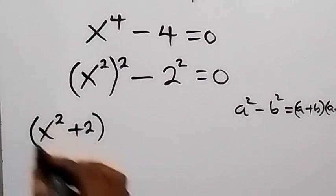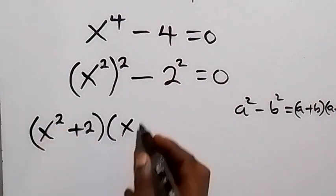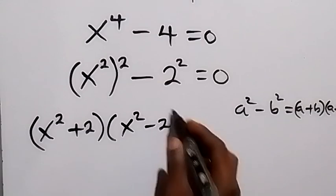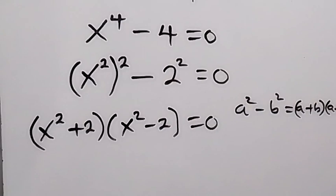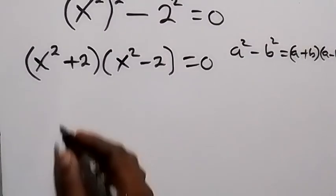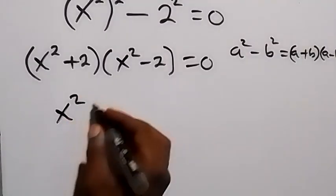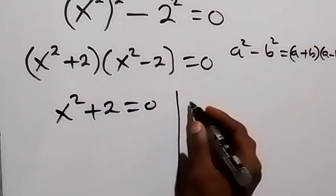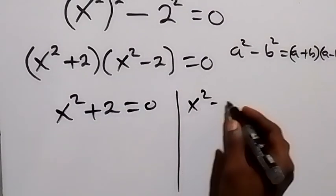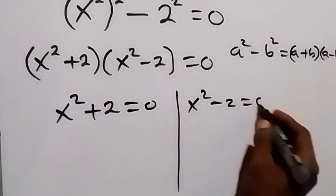then multiplied by x squared minus 2, which is equals to 0. And then we have two possible cases here: we have x squared plus 2 equals to 0, or we have x squared minus 2 equals to 0.